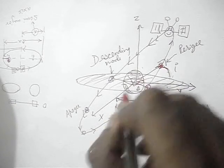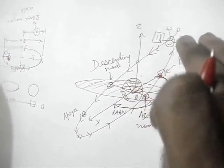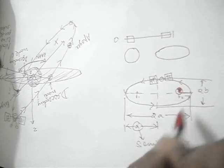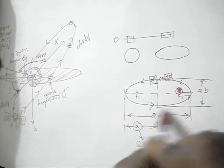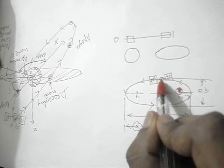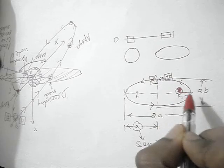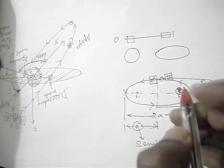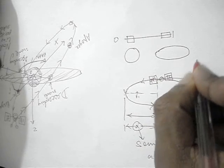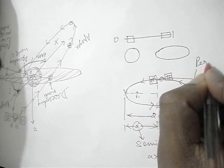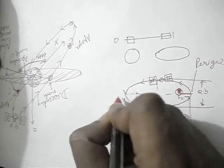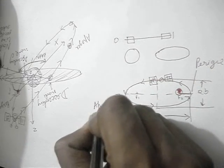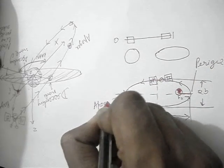Let's get back to the orbit diagram in the 2D plane. If this is the orbit, this is the satellite, and this is the earth, then this point is what we call the perigee, and this point is what we call the apogee.